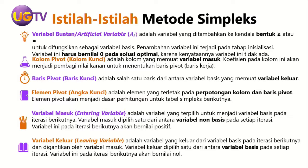Ada yang namanya kolom pivot atau kolom kunci, yaitu kolom yang memuat variabel masuk atau entering variable. Koefisien pada kolom ini akan menjadi pembagi dari nilai kanan untuk menentukan baris pivotnya. Apa yang dimaksud dengan baris pivot atau baris kunci? Yaitu salah satu baris antara variabel basis yang akan memuat variabel keluar atau leaving variable. Kemudian ada elemen pivot atau angka kunci, yaitu elemen yang terletak pada perpotongan kolom dan baris pivot. Elemen pivot ini akan menjadi dasar perhitungan untuk tabel simplex berikutnya.